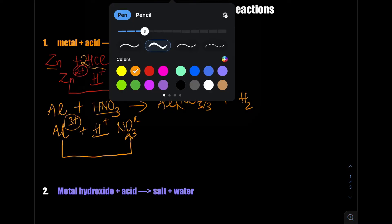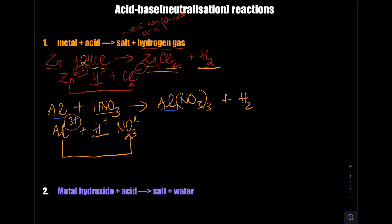Now let's balance the aluminium and nitric acid equation. We have one aluminium on each side, but one hydrogen on the left and two on the right. If we put 2 in front of HNO₃, there are two hydrogens and two hydrogens, but the nitrate is not balanced: two nitrates on the left and three on the right. So let's put 6 in front of HNO₃ and 3 in front of Al(NO₃)₃. That gives six hydrogens and six hydrogens, and six nitrates on each side. Then multiply the aluminium product side by 2, giving two aluminiums on each side. The equation is balanced: two aluminiums, six hydrogens, and six nitrates.